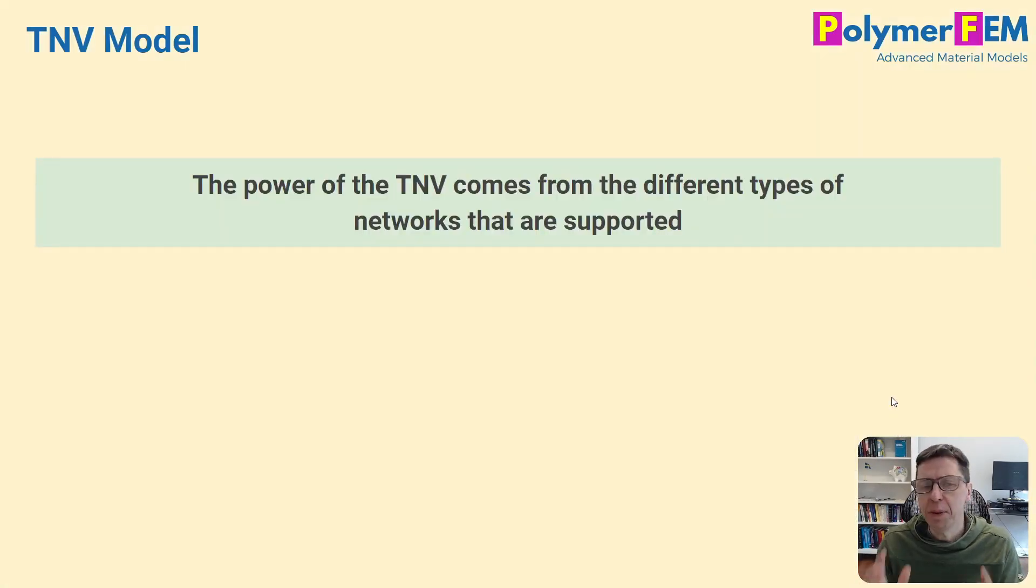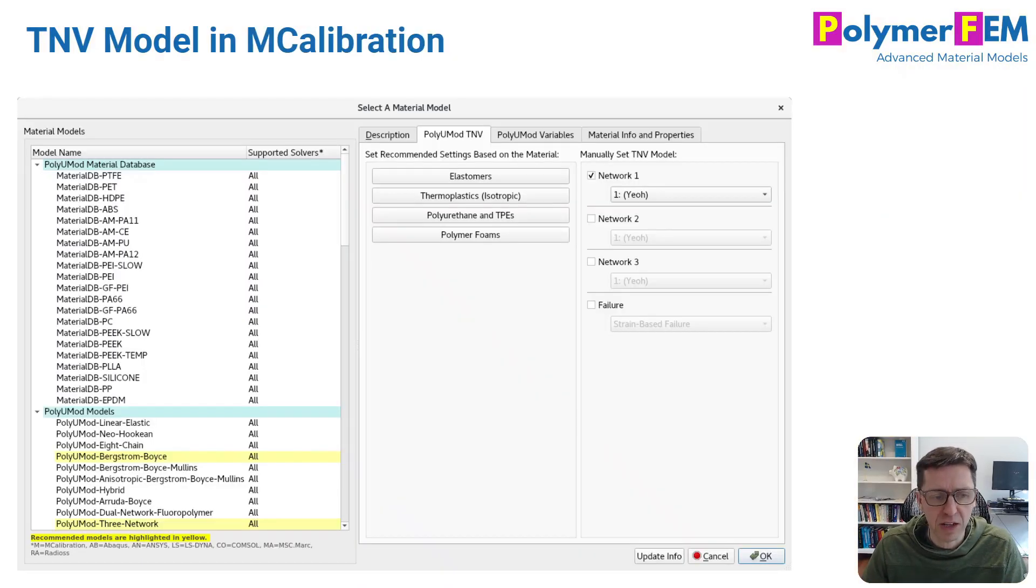So the power here of the TNV model, and the reason why it's so good when it comes to predicting the behavior of polymers, is that it has a lot of different types of networks to choose from. There are many things you can select.